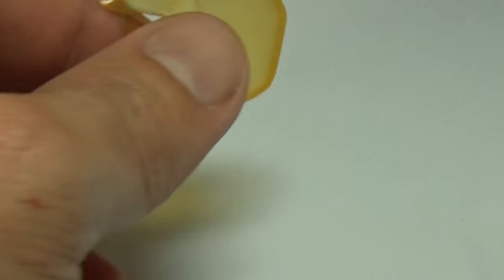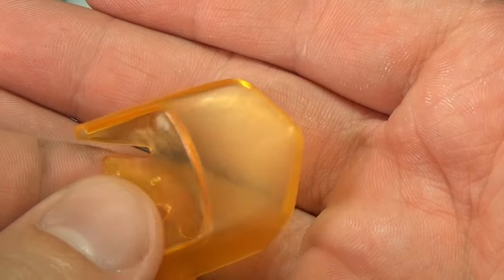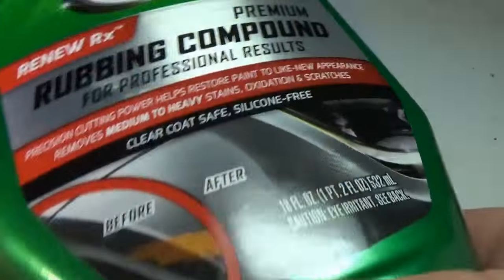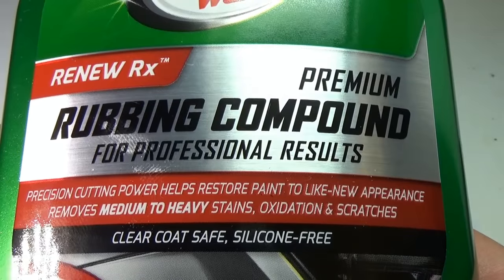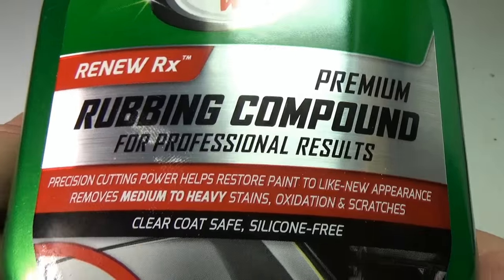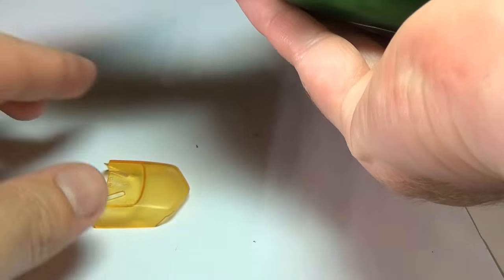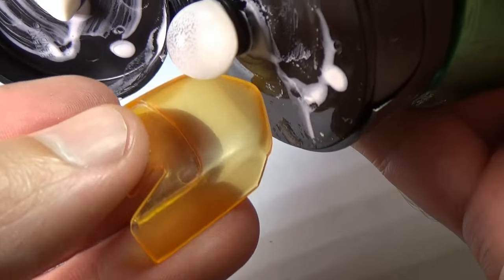When you get to about 3000 grit or finer, it's time to start polishing the plastic. To do this we'll use rubbing compound, also found at the auto parts store. I'm using Turtle Wax brand here. Just apply a liberal amount and using your fingers or a paper towel begin polishing in a circular motion.